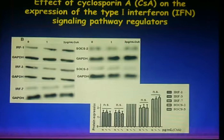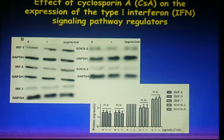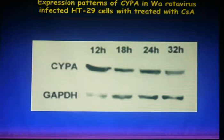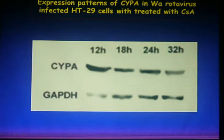Other interferon pathway regulator proteins, such as interferon regulatory factor 1, 3, and 7, and suppressor of cytokine signaling 2 and 3, showed little change. Furthermore, we found that this inhibitory effect of cyclosporin A on rotavirus replication occurs through a cyclophilin A-independent pathway. The expression of cyclophilin A in rotavirus-infected cells treated with cyclosporin A showed little upward difference at different time points.